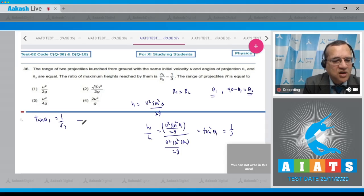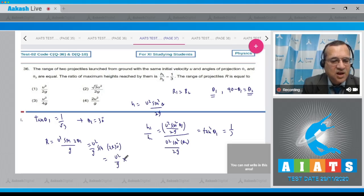Theta 1 is equal to 30 degrees. So one angle is 30 and second is 60. Now, the range of the projectile r is equal to u square sine of 2 theta divided by g. This is u square by g and sine of 2 into 30, which comes to be u square by g and sine 60 is root 3 by 2.